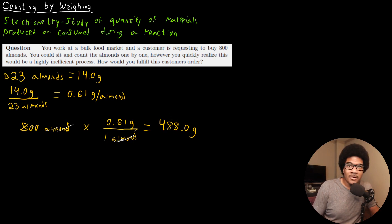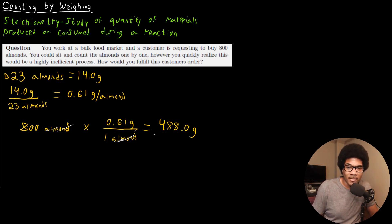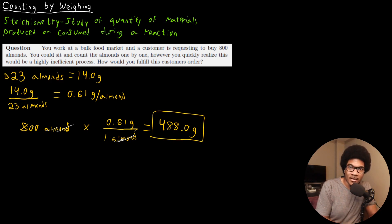So now instead of having to pick out 800 almonds one by one and serving them to your customer, all you have to do is get a huge bag, pour out almonds until the scale reads 488 grams, and you know you've got approximately 800 almonds. This is the idea — the concept behind counting by weighing.